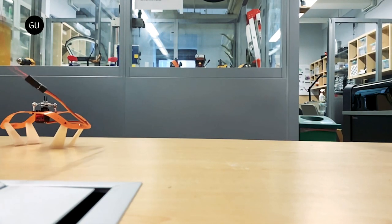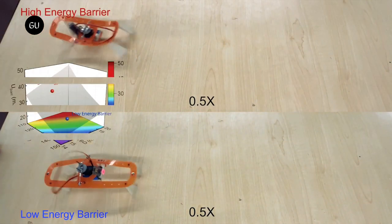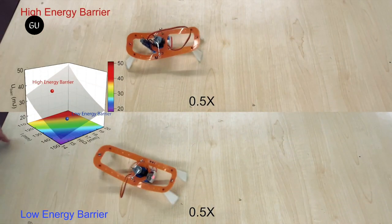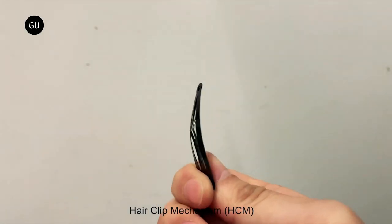In order for a soft-bodied robot to be practical, it has to be simple, light and energy efficient, yet still reasonably quick. A newly developed mechanism fits the bill and it's inspired by the humble hair clip.